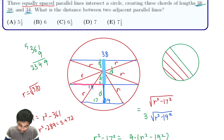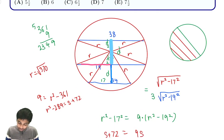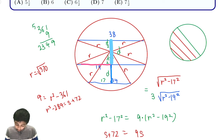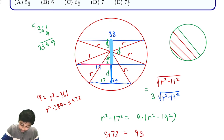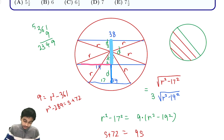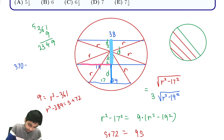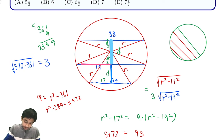Now we can find d. The distance from the center to each chord of length 38 is √(r² − 19²) = √(370 − 361) = √9 = 3. Since this distance equals d/2, the full spacing d between adjacent chords is 2 × 3 = 6.